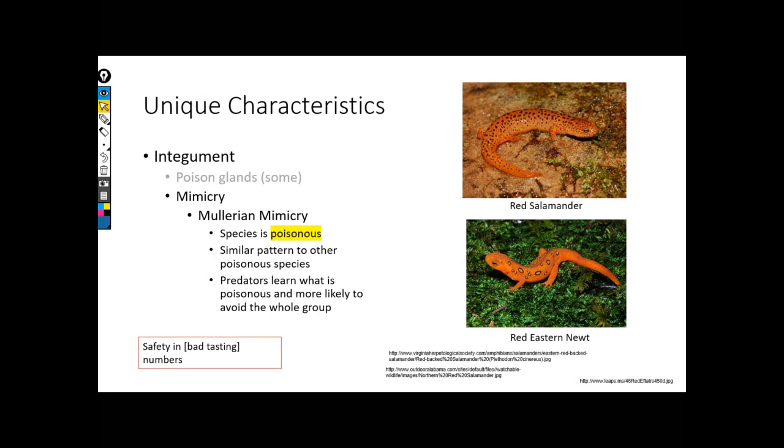So if we look at the example I have up here, both the red salamander and red eastern newt, both localish to the area, are both poisonous. And both sort of red and spotty. Red's a pretty common warning color. And so the idea here is, I'm red, spotty, and deadly. If you eat me, you're going to die. I'm red and spotty and deadly. If you eat me, you're going to die.